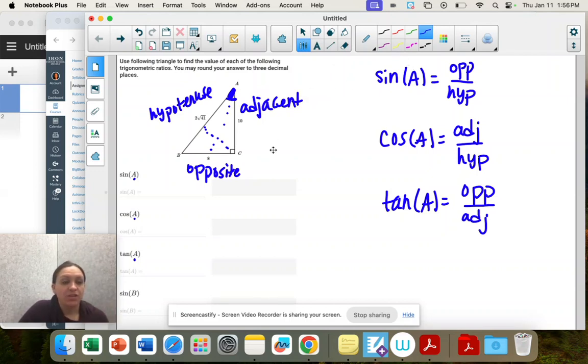Now we're just going to match those and make our fractions. So opposite over hypotenuse, eight over two square roots of 41. Adjacent over hypotenuse, so 10 over two square roots of 41. And then tangent is opposite over adjacent, so eight over 10.